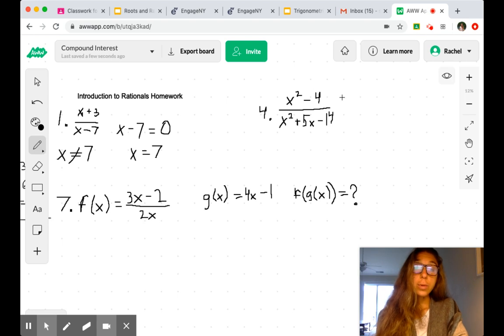First, we want to begin by factoring the numerator and the denominator. Because just by looking at this, we know that the domain is going to exist anywhere except where the denominator is zero. But we've got to find where that is.